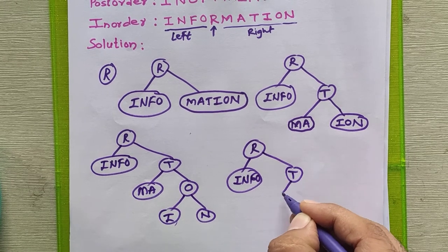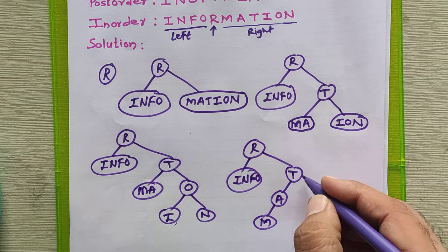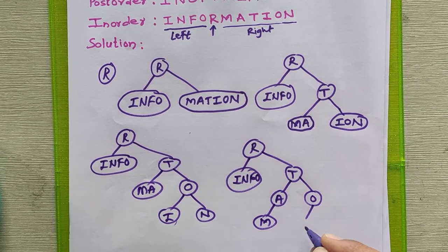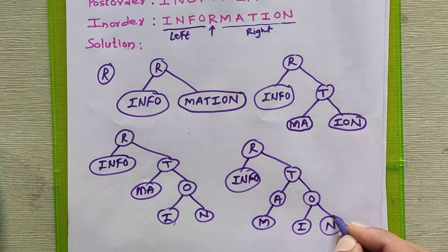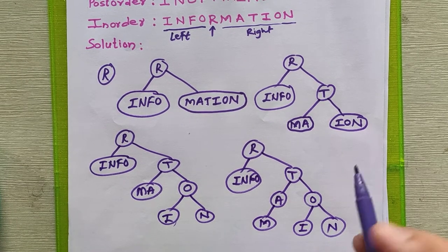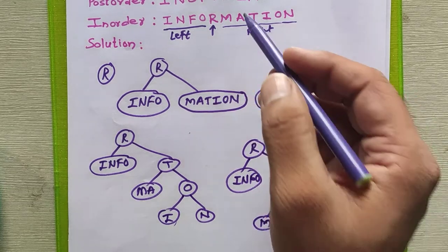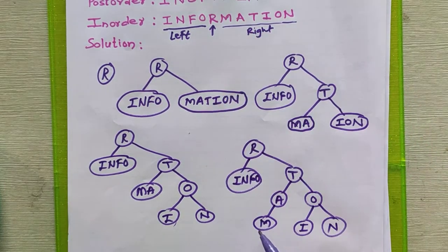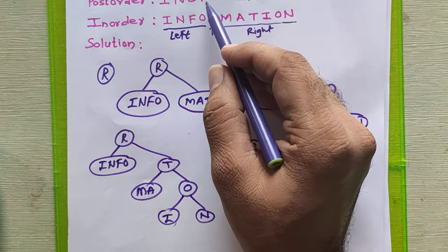We are making A as the root node. M will go to the left subtree. We have successfully placed node A. After node A in the post-order sequence, the next root is M. M is already placed because it is an individual element, so we go to the next element.